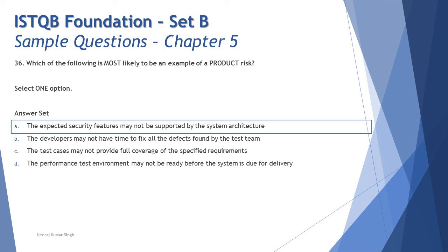Putting it all together, the right answer is A: the expected security features may not be supported by the system architecture. Being a quality characteristics issue, this is a product risk. All the rest are project risks.